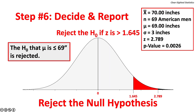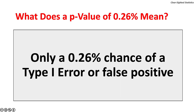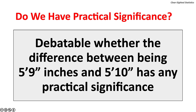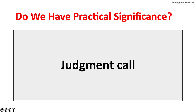Step 6: Decide and Report. With a test statistic as large as 2.789 and a p-value as small as 0.26%, there is sufficient evidence to reject the null hypothesis that the average height of an American man is 69 inches or less. The results are statistically significant. This low p-value does not mean the alternate hypothesis is true. Regarding practical significance, it is debatable whether the difference between being 5'9 and 5'10 has practical significance for Dubity Insurance. Decisions about practical significance are often judgment calls.